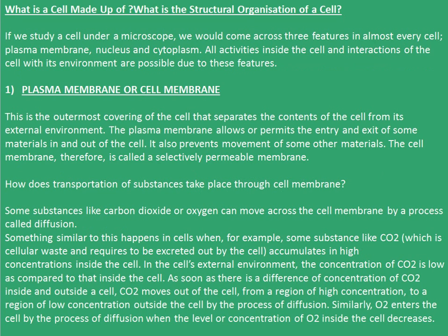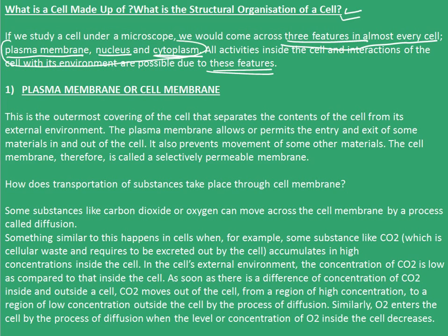Moving forward — what is a cell made up of? What is the structural organization of a cell? If we study a cell under a microscope, we come across three features in almost every cell: the plasma membrane, the nucleus, and the cytoplasm. All activities inside the cell and interactions of the cell with its environment are possible due to these features, and hence they are very important for the cell to survive.